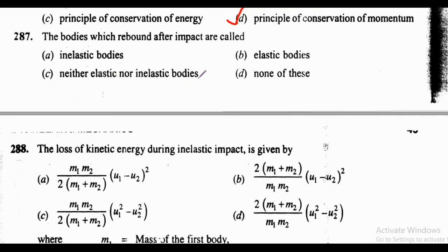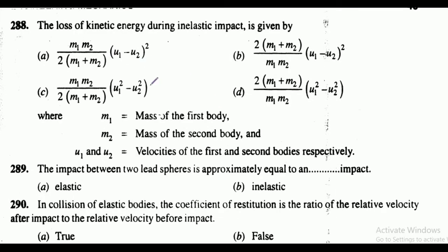Question 287: bodies which rebound after impact are called — inelastic bodies, elastic bodies, neither, or none of these? The correct answer is option B, elastic bodies. Question 288: the loss of kinetic energy during inelastic impact, where m1 and m2 are masses and u1 and u2 are velocities. The correct answer is option A: m1 into m2 upon 2 into bracket m1 plus m2 into (u1 minus u2) whole square.